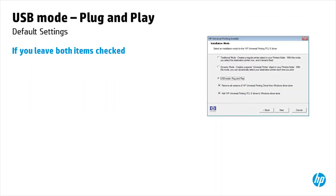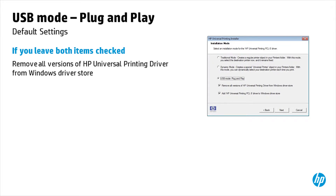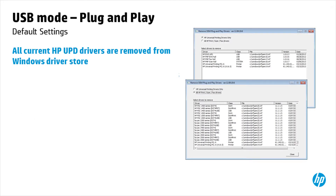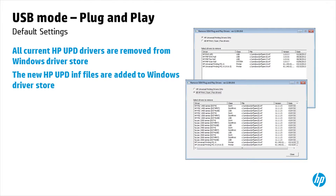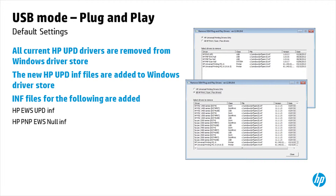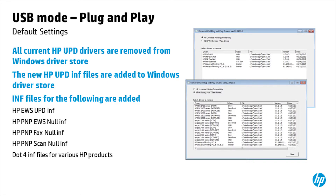If you leave both items checked — Remove all versions of HP Universal Printing Driver from Windows Driver Store and Add HP Universal Printing PCL6 Driver to Windows Driver Store — all current HP UPD drivers are removed and the new HP UPD INF files are added. INF files added include: HP EWS UPD INF, HP PNP EWS Null INF, HP PNP Fax Null INF, HP PNP Scan Null INF, .4 INF files for various HP products, and HP Printer LEDM INF. No non-HP UPD drivers are impacted.